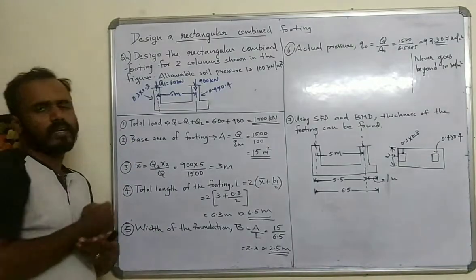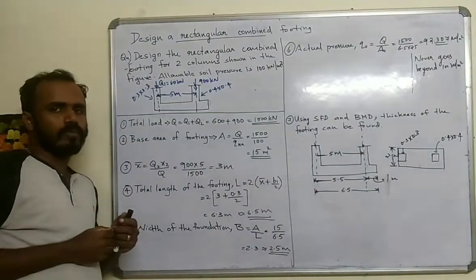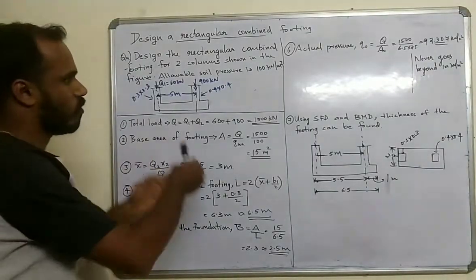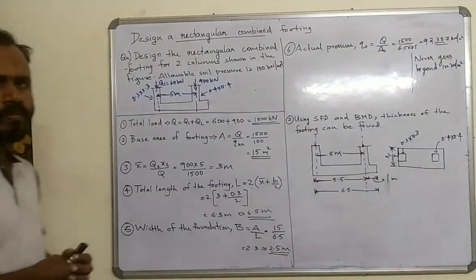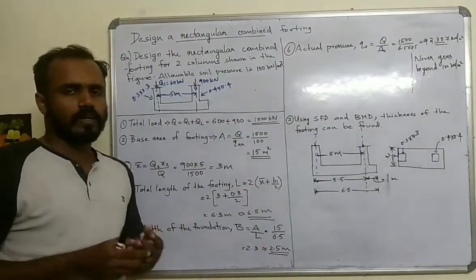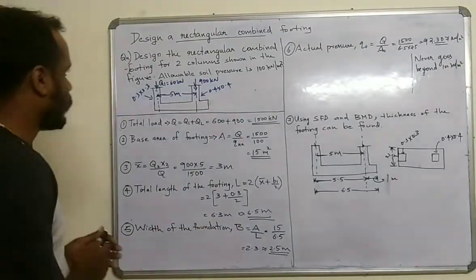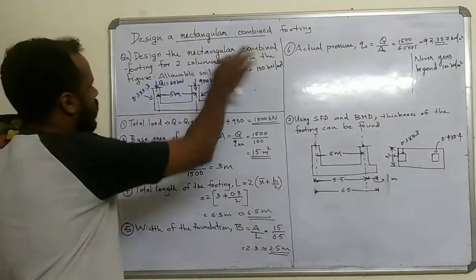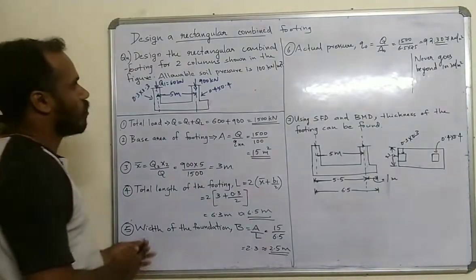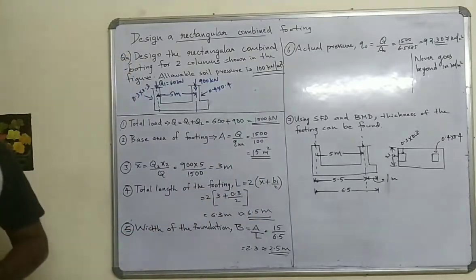Design of Rectangular Combined Footing. This is a very important portion of Module 3. We will design a rectangular combined footing for two columns. The allowable soil pressure is equal to 100 kN per m².